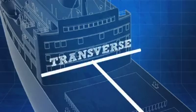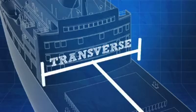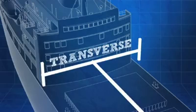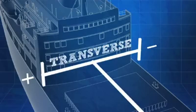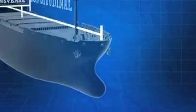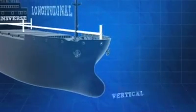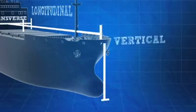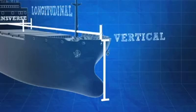Transverse is the horizontal direction across the beam of a ship. Transverse distances are measured port or starboard from the centerline, with one written as a positive distance and the other as negative. It is not standard which is which, however, and this varies from ship to ship as well. Vertical distances on a ship are measured upward from the baseline, or lowest point of the keel.